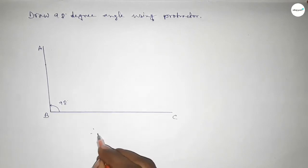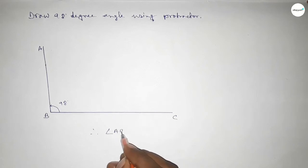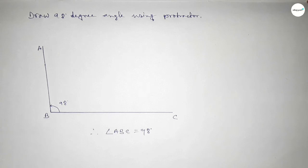Therefore, angle ABC equals 98 degrees. That's all, thanks for watching. If this video is helpful to you, then please share it with your friends.